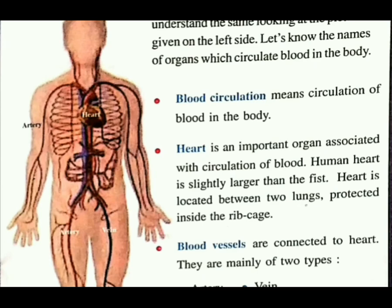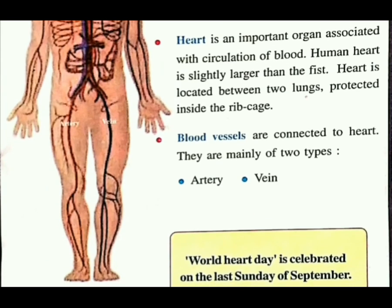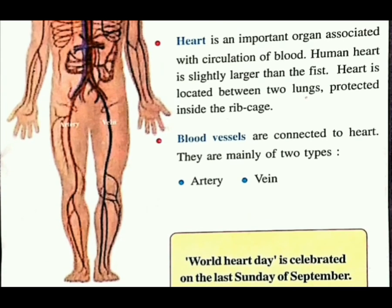Heart is located between two lungs, protected inside the rib cage — जो हमारे फेफड़ों के बीच में होता है, हमारे body में उसके बीच में वो होता है. Blood vessels — यानी रक्तवाहिनियाँ — are connected to heart. They are mainly of two types — उसके दो नाम, दो type की होती हैं: artery and vein — यानी धमनी और शिरा — जैसे गुजराती में बोलते हैं धमनी और शिरा.